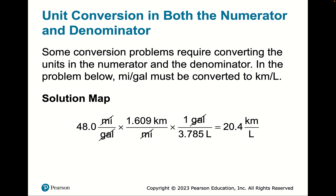Some conversions require handling units in both the numerator and denominator. For example, converting miles per gallon to kilometers per liter: convert miles to kilometers and gallons to liters separately. You can do gallons-to-liters first or miles-to-kilometers first — the order is up to you — and you get the same answer either way, as long as the units all check out.